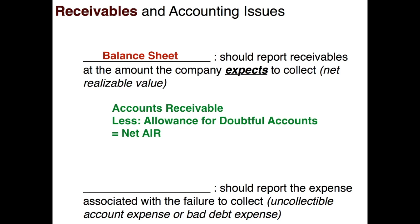On the balance sheet, receivables will be presented as accounts receivable less your allowance for doubtful accounts, giving us net accounts receivable — that word "net" again means something has been taken out, in this case what we don't expect to collect. On the income statement, the flip side is that you must report the expense associated with the failure to collect. If you don't expect to collect from some customers, you book that as an expense to reduce taxable income. This is called bad debt expense, and you may also see it called uncollectible account expense.